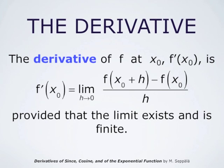The definition of the derivative of a function f at a number x₀ is that the derivative f' at x₀ is the limit of the difference quotient — f at x₀ plus h minus f at x₀, divided by h — as h goes to 0. We must assume that the limit exists and that it is finite.